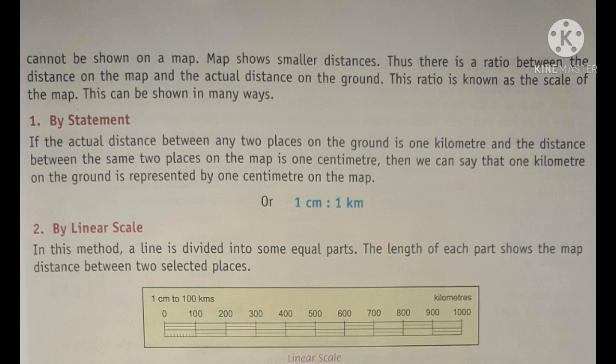The scale can be shown in many ways. First, by statement. If the actual distance between any two places on the ground is 1 km and the distance between the same two places on the map is 1 cm, then we can say that 1 km on the ground is represented by 1 cm on the map, or 1 cm equals 1 km.